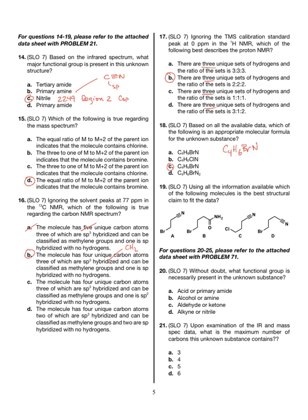Question 19: which of the following is the correct structure? Eliminate A by simple carbon count — it only has 3. Eliminate B from question 14's answer: you need a nitrile, not an amide. Eliminate C because of the chlorine. So the correct answer is D, which matches all the available data.